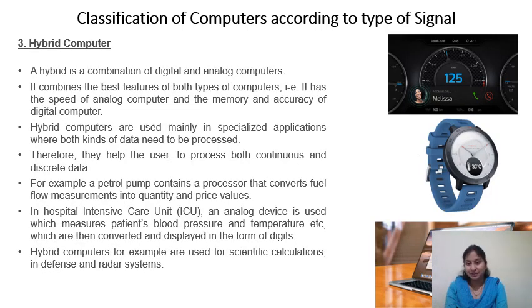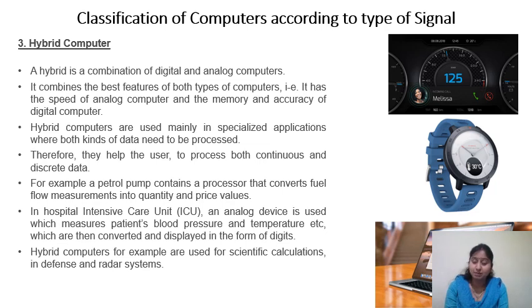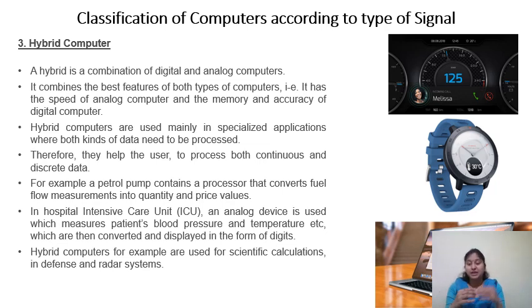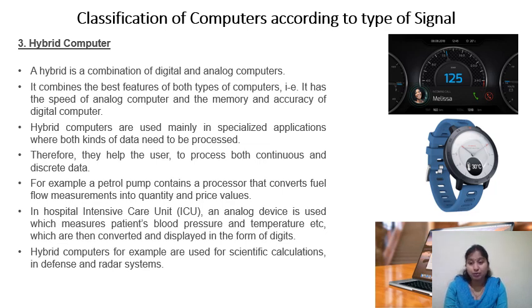The third type is the hybrid computer. Hybrid means a combination of both digital and analog. Hybrid computers combine the best features of both: the speed of analog computers and the memory and accuracy of digital computers. They are mainly used in specialized applications where both kinds of data need to be processed, helping users process both continuous and discrete data.